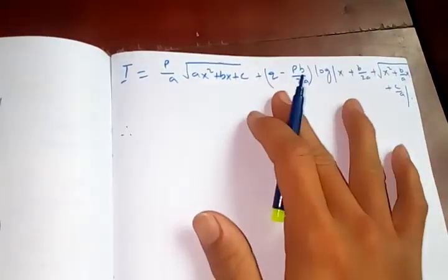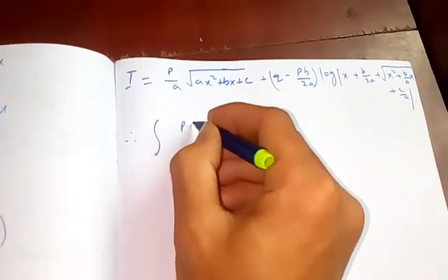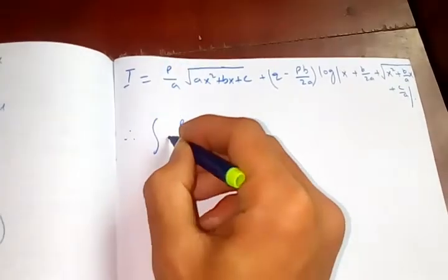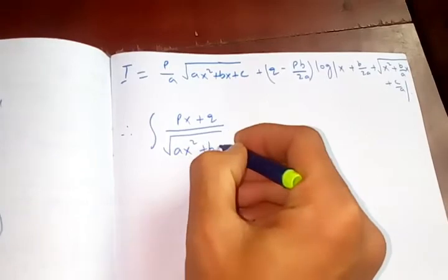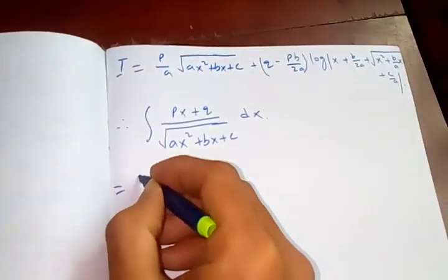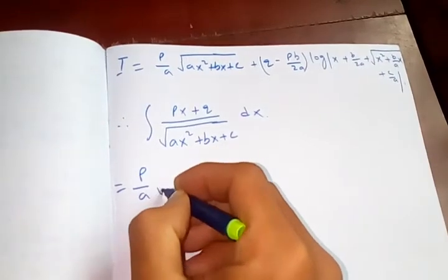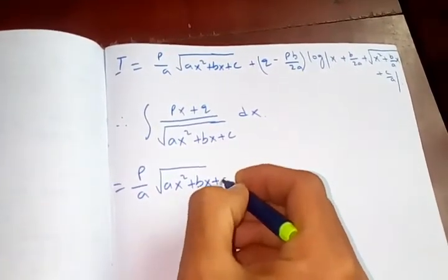So this is our answer already. Therefore, our integral of px plus q upon square root of ax square plus bx plus c dx is nothing but p upon a square root of ax square plus bx plus c,